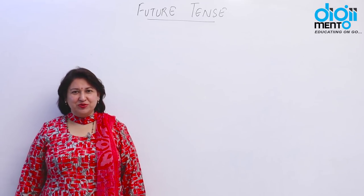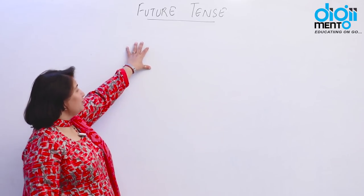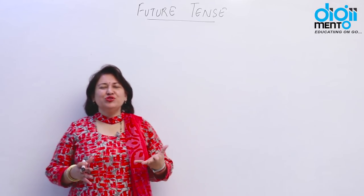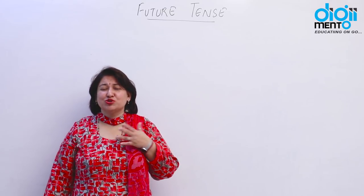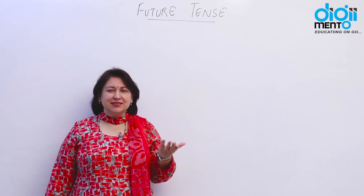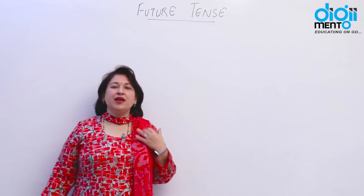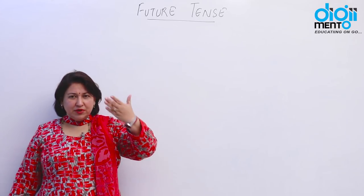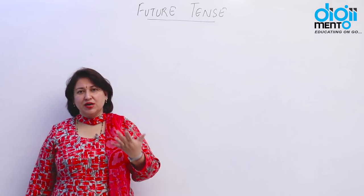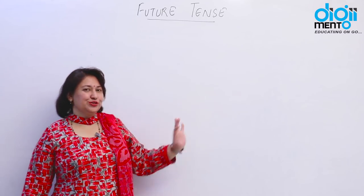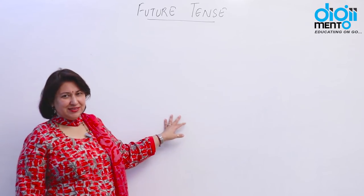Hello students, welcome to Dijiminto Education. The topic that we are going to do today is the future tense. Future is such a thing that nobody is sure about it. We cannot say what will happen in the future, how will it happen, when will it happen. But we are going to imagine that this will happen — I will do it, I will go, come and eat. Those are the conditions we are going to see today in the future tense.